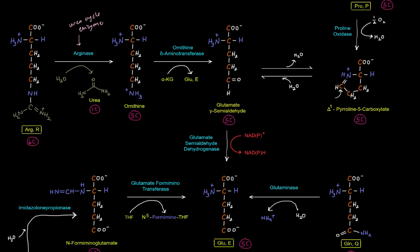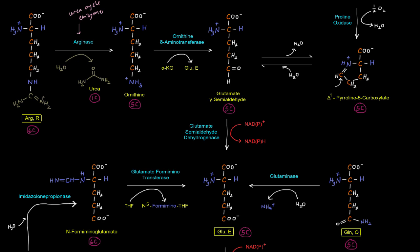And so both proline and arginine end up here with this glutamate gamma semialdehyde, which can be turned into glutamate by an enzyme called glutamate semialdehyde dehydrogenase. Of course, that requires a NAD plus or NADP plus. And so we oxidize this carbon from going from an aldehyde to a carboxylic acid group or a carboxylate group. And now we have glutamate.